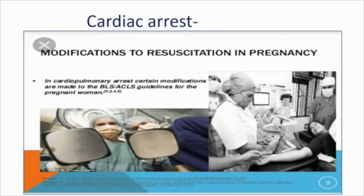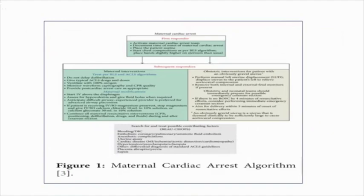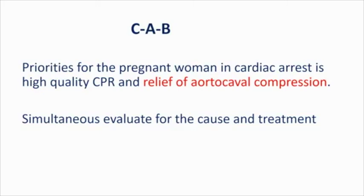What to do when the situation goes out of control and you land up with cardiac arrest? Obviously you are going to resuscitate the patient with modifications relevant to pregnancy. If you look at the standard algorithm it is very confusing, so I have simplified it. The CPCR with changes pertinent to pregnancy will be narrated with the salient features highlighted. It is going to be CAB: circulation, airway, and breathing. The priorities of pregnant women in cardiac arrest are high-quality CPR and relief of aortocaval compression. Simultaneously, we have to evaluate for the cause and start the treatment.